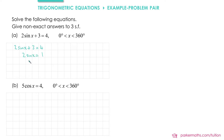Then I'll divide both sides by 2. Once we get to sine x equals a half, we could use a calculator to do inverse sine of a half, but if you know your exact values well enough, you'll know that x equals 30 degrees.